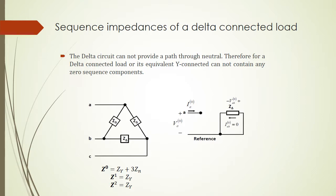The sequence impedance of a delta connected load can be obtained using delta-to-star conversion. When you do this conversion, you realize that the impedance connecting to the neutral or ground does not exist — meaning Zn is actually infinity. Therefore the zero sequence impedance is infinity, which means there is no connection to the reference, and for the zero sequence network it is an open circuit. The positive and negative sequence remain the same as before.